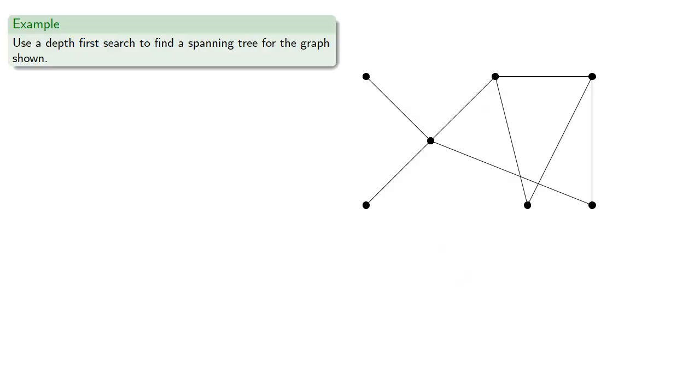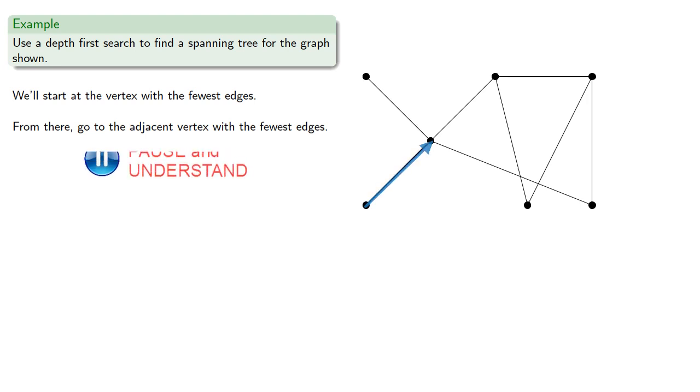So if we wanted to use a depth first to find the spanning tree for this graph, we'll start at the vertex with the fewest edges. And that's one of these two, so we'll start here. And then from there, we'll go to the adjacent vertex with the fewest edges, well, not really any choice. We have to go here. And we'll look at our adjacent vertices and we'll go to the one with the lowest degree, which is this one.